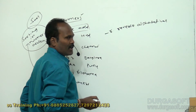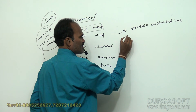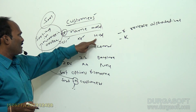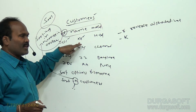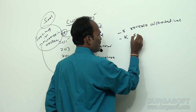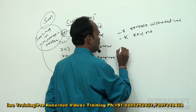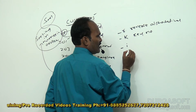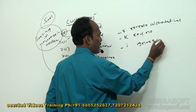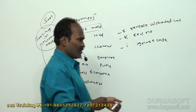Minus r means reverse alphabetical order. Minus k means sorting according to a key value — for example, if there are three key columns and you want to sort by the second field, you use sort minus k 2. The key number indicates which column to sort by. Minus i option is used to ignore case sensitivity.